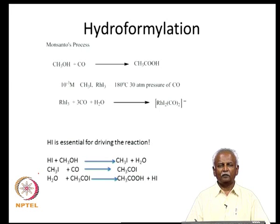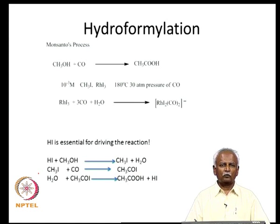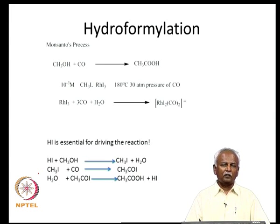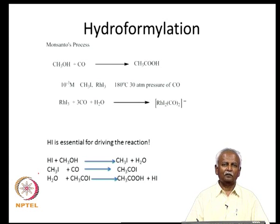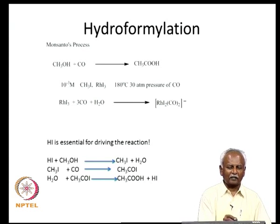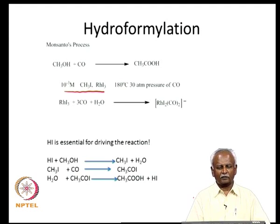Let us take up the first reaction, which is probably one of the simplest in this series — the carbonylation of methanol. Methanol is reacted with carbon monoxide to generate acetic acid. If you heat the two under very high pressures, you will not get acetic acid, but the presence of rhodium iodide and methyl iodide as a catalyst in catalytic quantities is necessary to push the reaction from left to right.